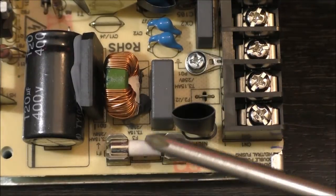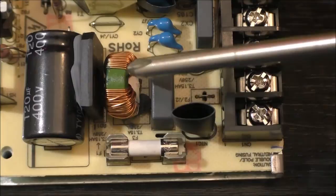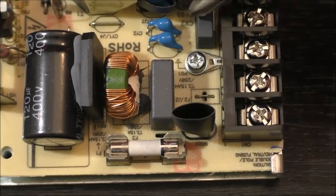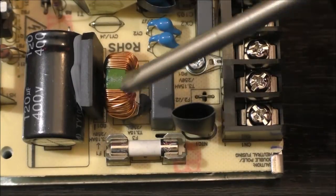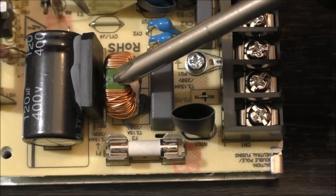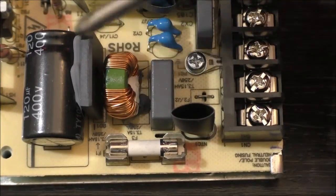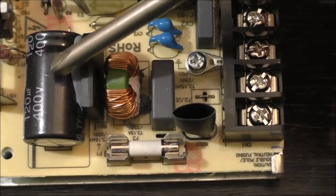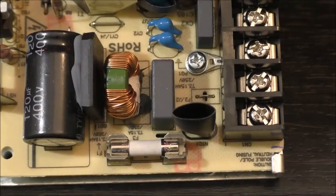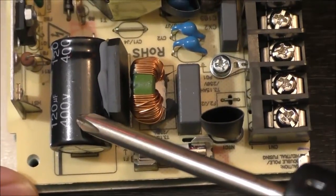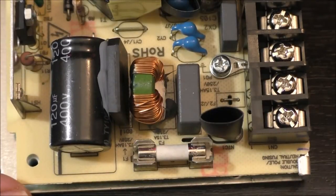So here we have our NTC, we have our fuse, we have some filter capacitors, we have our Y capacitors over here, we have a choke, common mode choke, as well as our bridge rectifier. And this is rectified and stored in the bus capacitor. And over here we have a 120 microfarad, 400 volt capacitor. And this one is an LTEC brand.